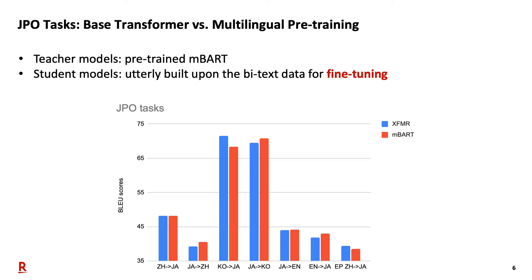Starting from this slide, I will show you a series of experimental results we achieved on the JPO task and BSD task. Firstly, we compare the experimental results of the base transformer model versus multilingual pretraining models. As you can see in the results chart, we observed that the MBART models outperform the transformer models in 5 out of 7 language pairs, where the maximum margins can reach as much as 1.3 BLEU scores — that is, for the Japanese-to-Chinese and Japanese-to-Korean models.